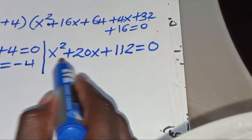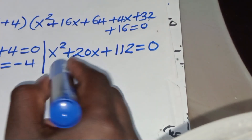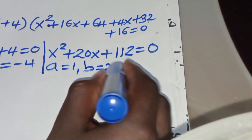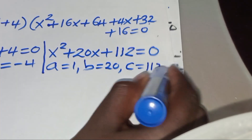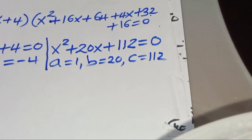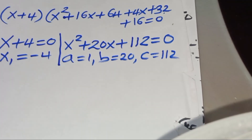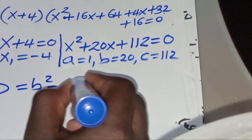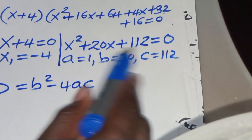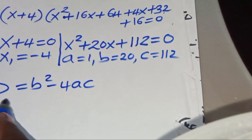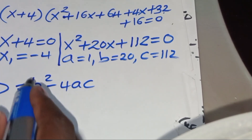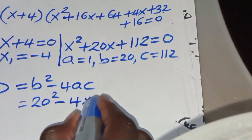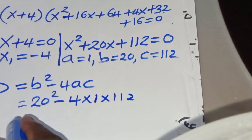Now let's determine the other solutions from the quadratic equation where a = 1, b = 20, and c = 112. We calculate the discriminant: b² − 4ac = 20² − 4(1)(112).